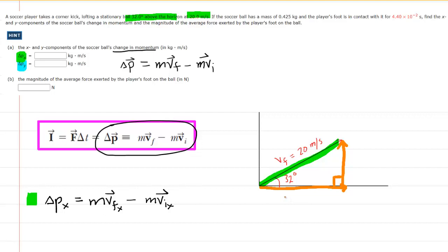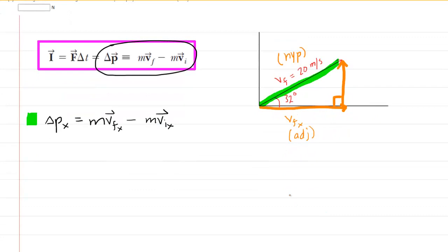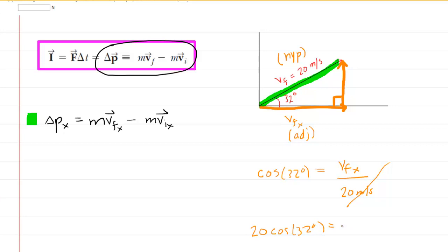By drawing the components in that manner, we form a right triangle. Using trigonometry, the x component is the adjacent side relative to the 32-degree angle, and the final velocity is the hypotenuse. The trig function relating adjacent and hypotenuse is the cosine function. So, cosine of 32 degrees equals the final velocity in the x direction divided by 20 meters per second. Multiplying both sides by 20, the final velocity in the x direction is 20 cosine of 32 degrees.